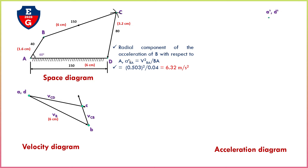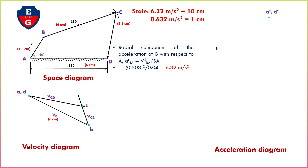Now find the radial component of the acceleration of B with respect to A. We know V equals R omega, so the radial component equals V squared BA divided by BA. The value of V squared BA equals 0.503, divided by the length of BA which is 40 mm converted to 0.04 meters. From this we find the radial component of BA equals 6.32 meter per second square. Assuming scale: 6.32 meter per second square equals 10 centimeters, so 1 centimeter equals 0.63 meter per second square.